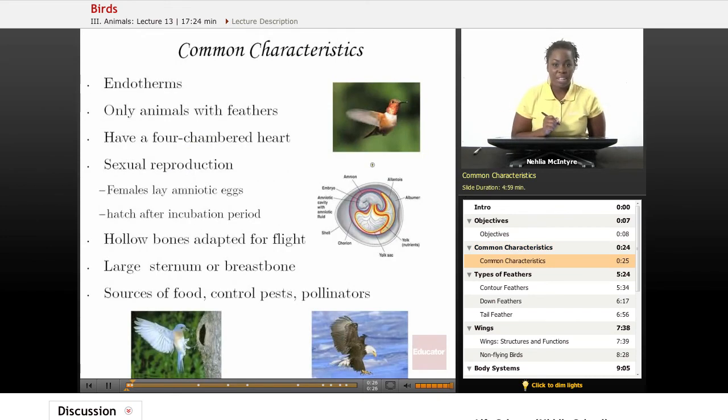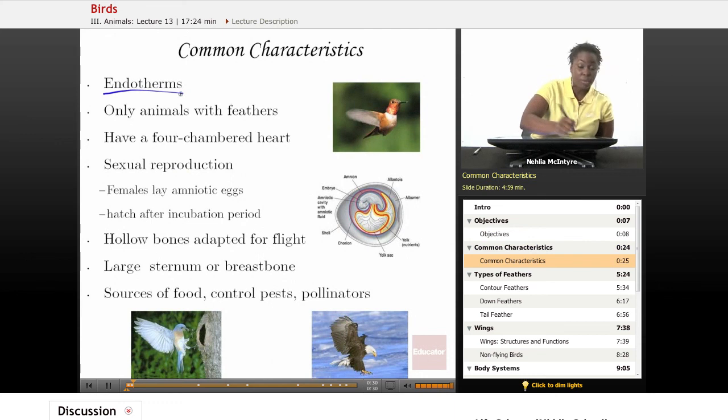Let's discuss the common characteristics of birds. All birds are endotherms. What does that mean? They are warm-blooded animals that can control their body temperature on their own.